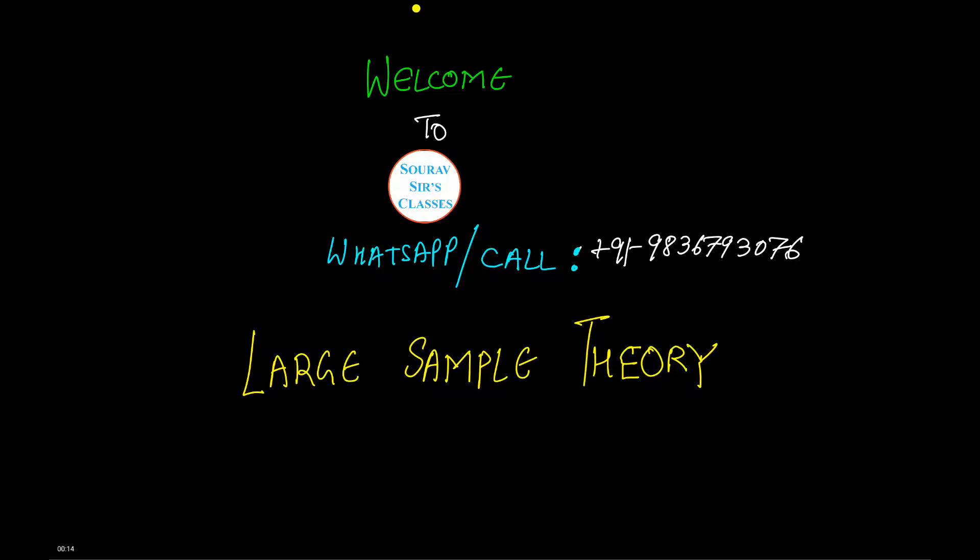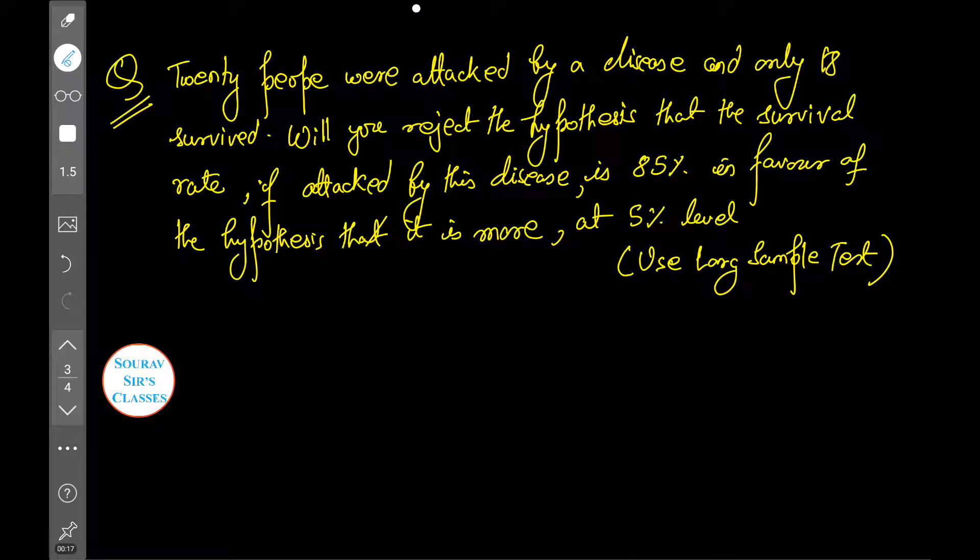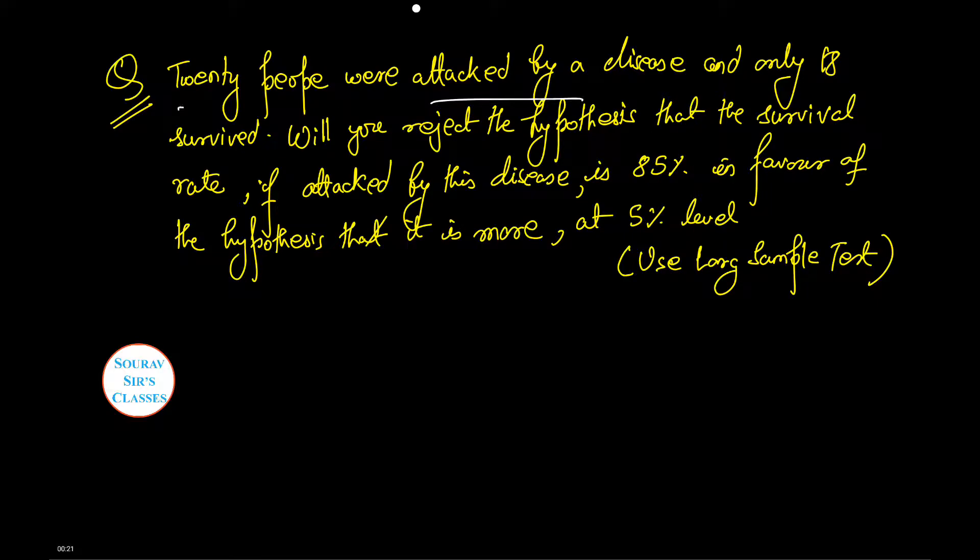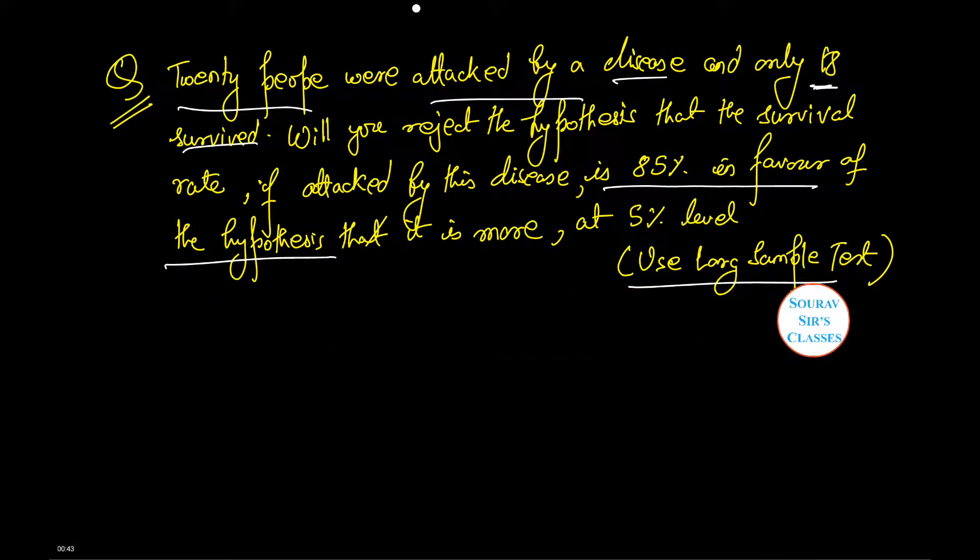Let's see quickly our first question. Twenty people were attacked by a disease and only eighteen survived. Will we reject the hypothesis that the survival rate if attacked by the disease is 85%, in favor of the hypothesis that it is more, at 5% level? Note we are also given a hint of using large sample test.